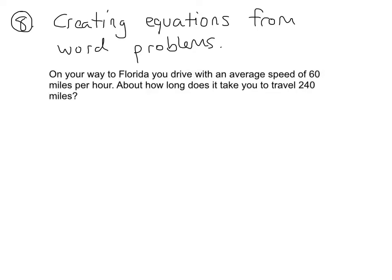So what do we know, what do we not know? Well, we know you drive an average speed of 60 miles an hour. And we know that you're traveling 240 miles. But what we don't know is how long it takes you to travel those 240 miles at 60 miles an hour. So when we don't know something, what do we do? We replace it with a variable. And because we're talking about how long does it take you, we're talking about time, so we're going to use t as our variable in this case. But what's our equation?